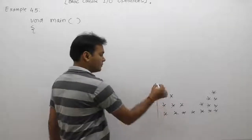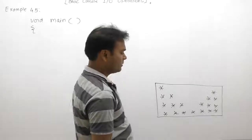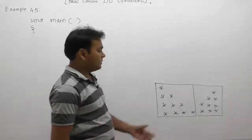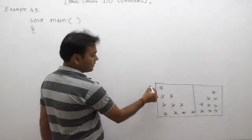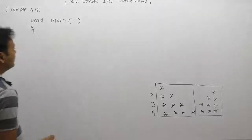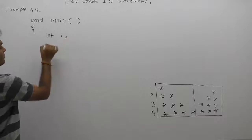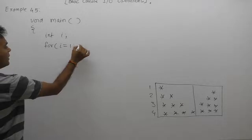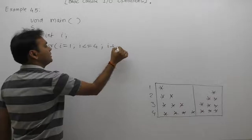Now let's see this pattern. We are completing it in two different printf flavors. We will discuss how to manage this pattern using printf. In every case there are four lines — one, two, three, four. Therefore we are managing the loop to run four times: integer i, loop i equals one, i less than or equal to four, and i plus plus.